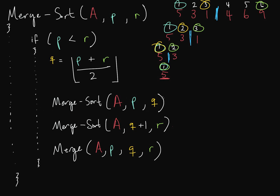We return from that merge sort and call the second one: Q plus 1 to R, which is index 2 to 2. Again P equals R, so that single element (3) is sorted. We return from this call. Now we need to merge these two: is 5 less than 3? No, so we bring 3 down. Nothing remains on that side, so 5 comes down. That's sorted.